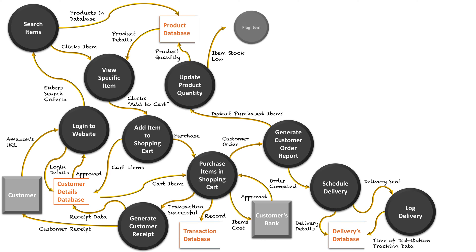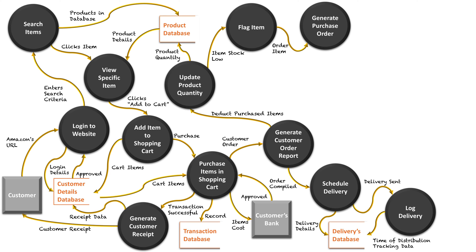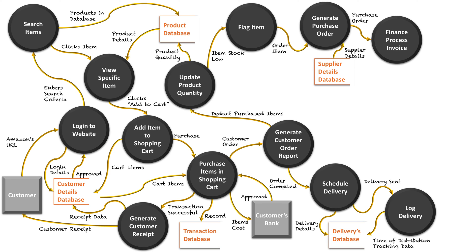Once a product reaches a low quantity, we need to flag the item and say this product's quantity is low. For Amazon to be successful, they need to replenish products before running out, because thousands of people are on Amazon's site at a time and if they can't sell the products customers want, they're losing thousands of dollars. So they flag the item as low in stock, the ordering process starts, they generate a purchase order and say we need this amount of items, then contact the supplier — accessed through a supplier's database.